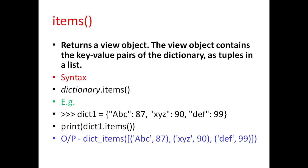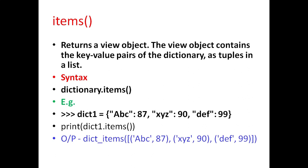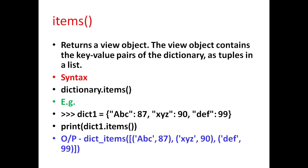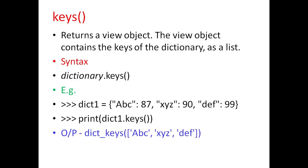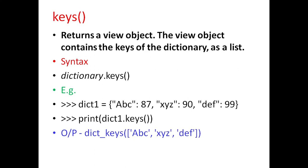Next is items, which returns a view object. The view object contains the key-value pairs of the dictionary as tuples in a list. The general syntax is dictionary.items. For example, if we have specified dictionary dict1 with these elements, when we print dict1.items it will display the dictionary items.